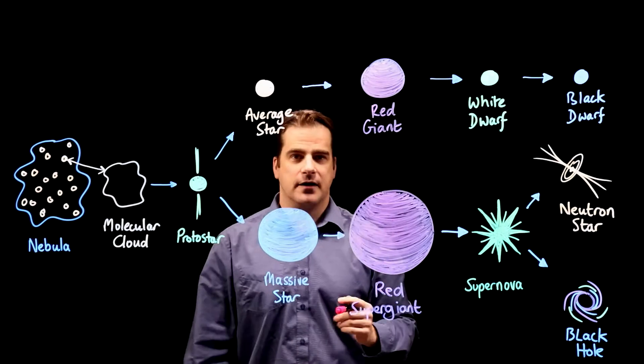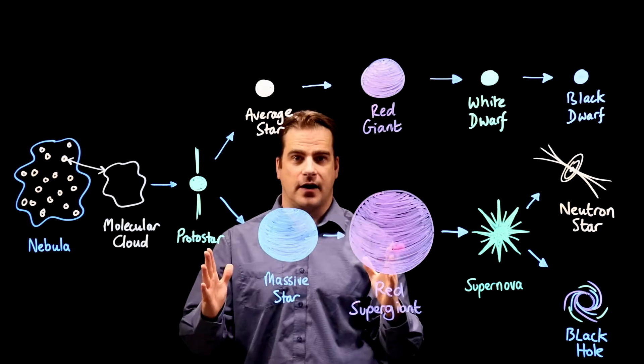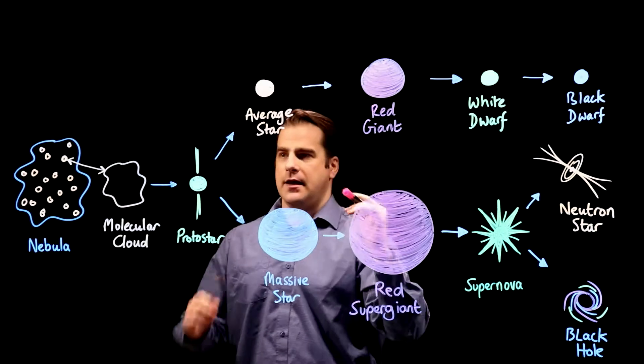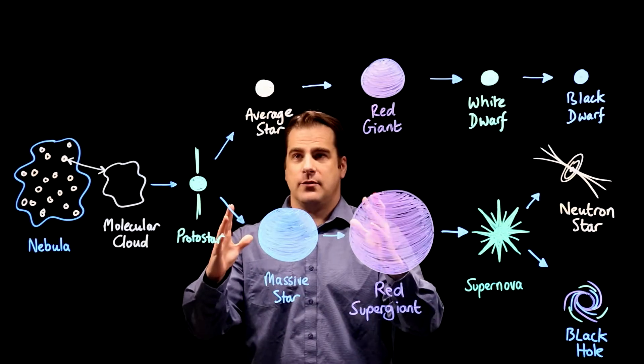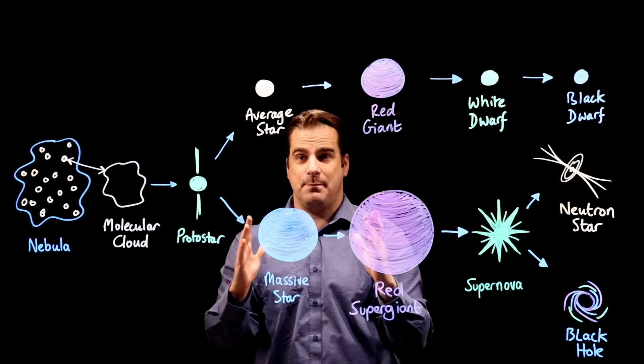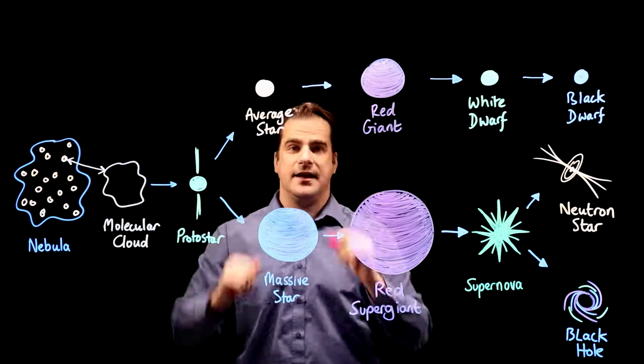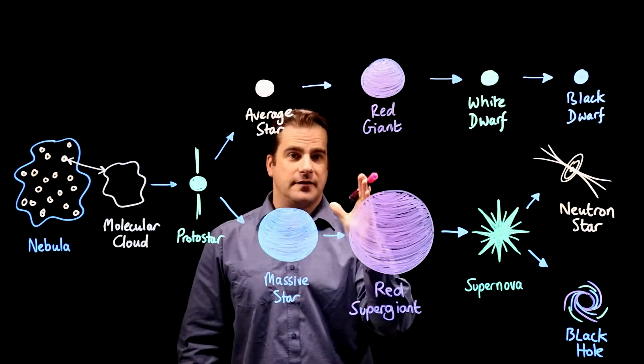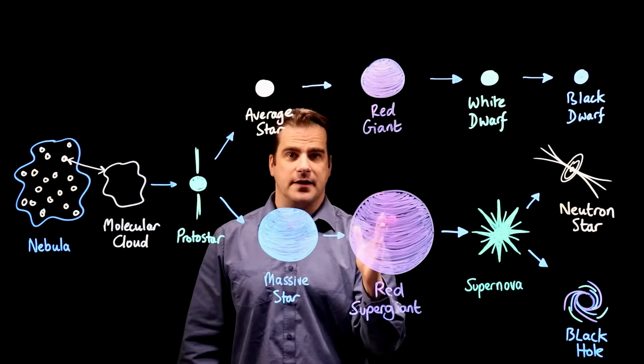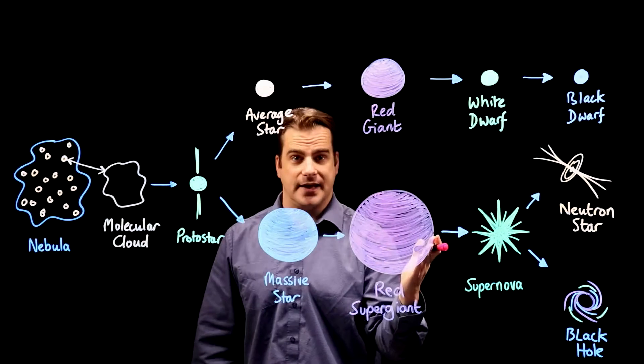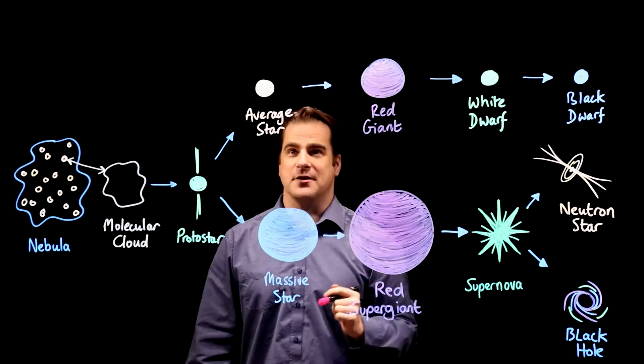So an average star, like our Sun, will spend about 10 billion years in its main sequence and the Sun is about 4.6 billion years old now so it's about middle-aged which is pretty amazing really.